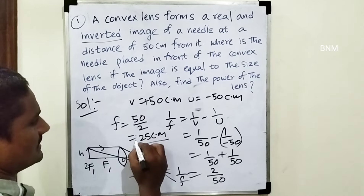Power of the lens. P is equal to 1 by F, where F is in meters. F in centimeters is 25, so converting: 100 by F equals 100 by 25 equals 4 diopters. Power of the lens is 4 diopters.